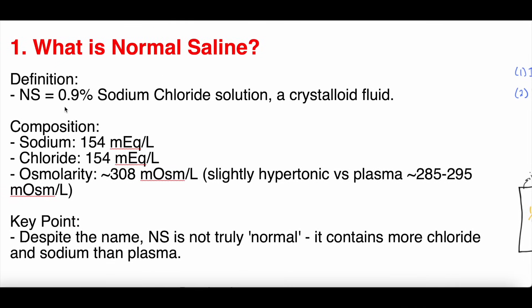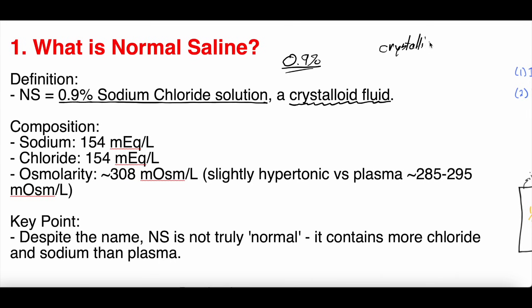Normal saline is a 0.9% sodium chloride solution — that's where we get the 0.9%. It is a crystalloid fluid. Crystalloid fluids include normal saline, lactated ringers, plasmalyte, and others. Normal saline is composed of sodium and chloride — NaCl, salt, for all intents and purposes. And we call it 'normal,' but interestingly enough, it is not really normal at all. It has about 154 milliequivalents of sodium and 154 milliequivalents of chloride.